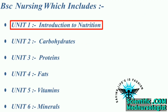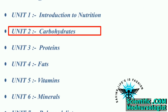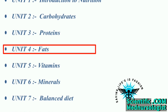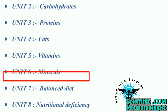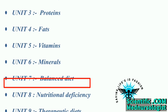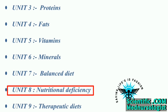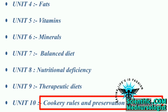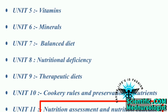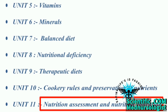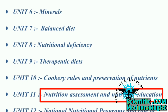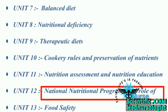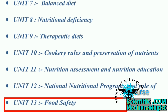The 13 units include: Unit 1 Introduction to Nutrition, Unit 2 Carbohydrates, Unit 3 Proteins, Unit 4 Fats, Unit 5 Vitamins, Unit 6 Minerals, Unit 7 Balanced Diet, Unit 8 Nutrition Deficiency, Unit 9 Therapeutic Diet, Unit 10 Cookery Rules and Preservation of Nutrients, Unit 11 Nutrition Assessment and Nutrition Education, Unit 12 National Nutrition Program and Role of Nurse, and Unit 13 Food Safety.